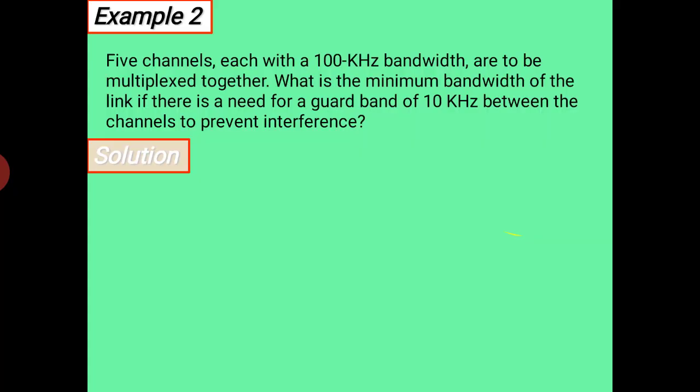The next example: five channels, each with 100 kilohertz bandwidth, are to be multiplexed together. What is the minimum bandwidth of the link if there is a need for a guard band of 10 kilohertz between the channels to prevent interference?